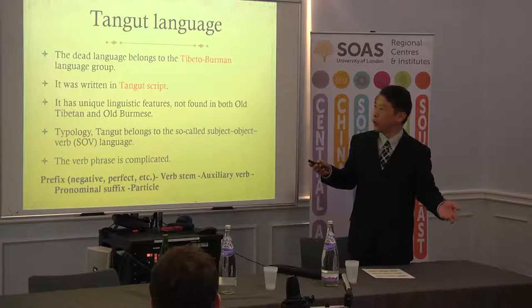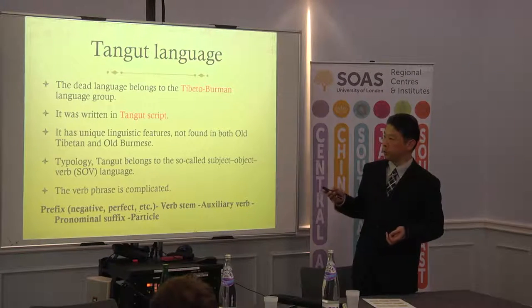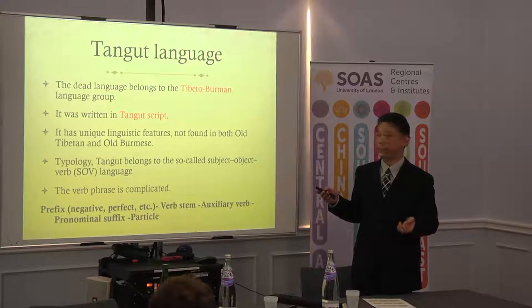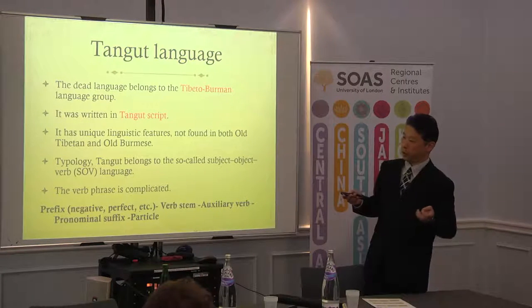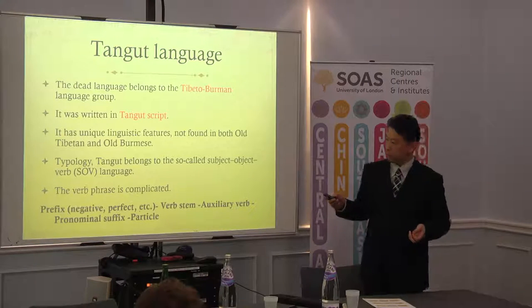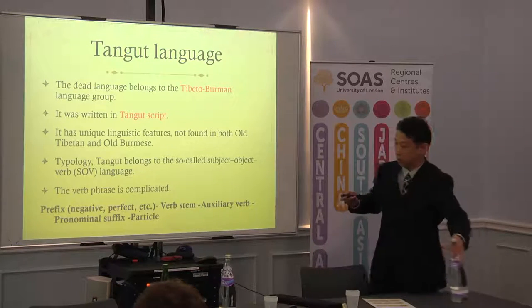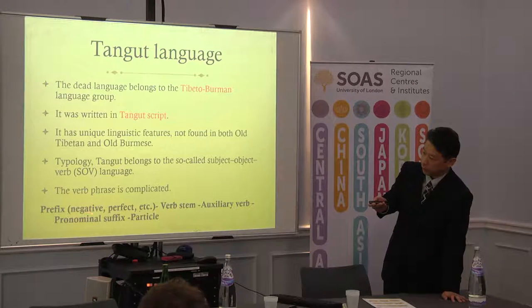The Tangut language, as you know well, belongs to the Tibeto-Burman language group, and it was written in Tangut script. The Tangut language has some unique features not found in both old Tibetan and old Burmese. This is general information on typology. Tangut belongs to the so-called subject-object-verb language. Also, Tangut has very complicated verb phrases in some cases. For example, there is a prefix, including negative, perfect, and others.